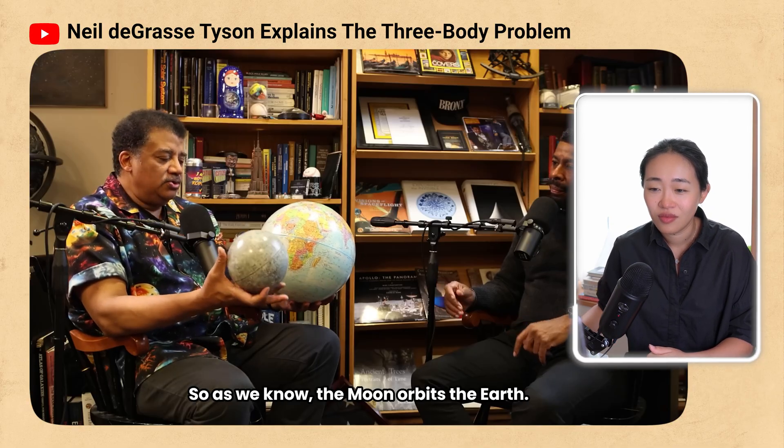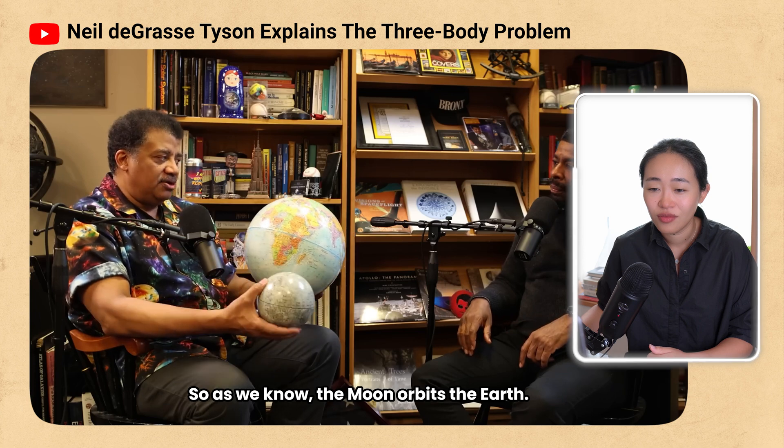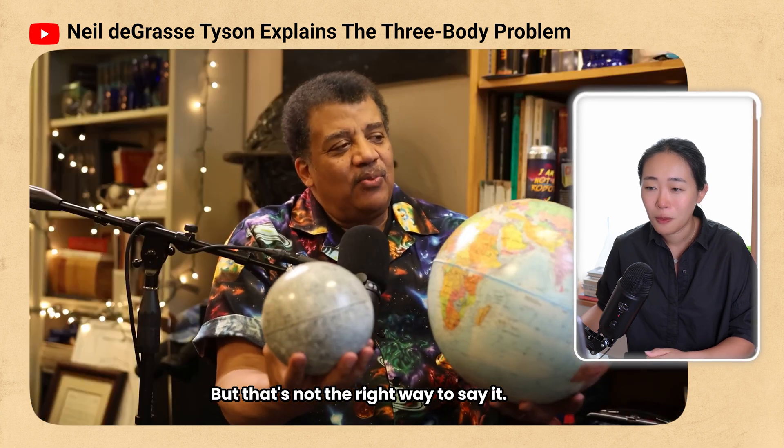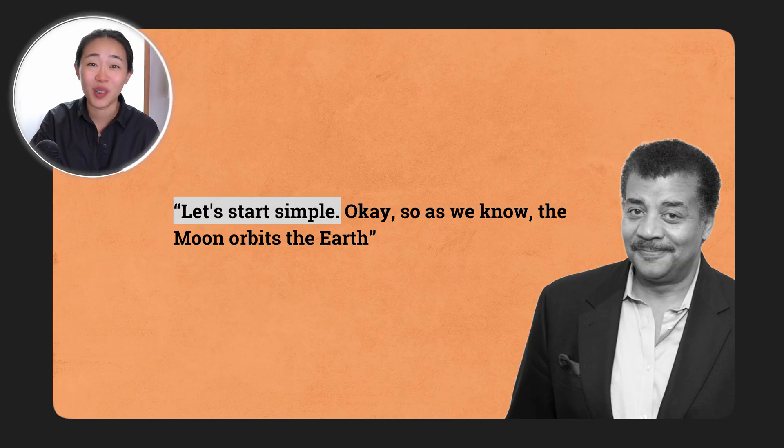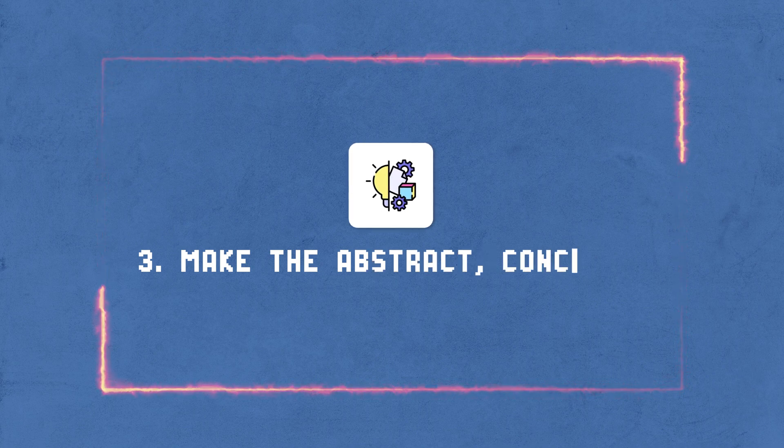Neil says: "So as we know, the moon orbits the earth, right? But that's not the right way to say it." Let's pause here. He's starting simple, which genuinely is one of the hardest things to do. We hear this all the time at work: make your presentation simpler, explain it to me in simpler terms. He shows us how to do this in a few ways. The third framework is he makes the abstract concrete — that is a key skill when you want to make things simpler.